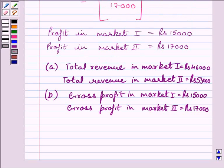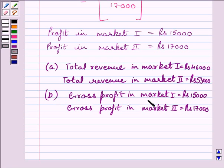So our final answer: total revenue in market one is Rs. 46,000, total revenue in market two is Rs. 53,000 for part A. For part B: gross profit in market one is Rs. 15,000 and gross profit in market two is Rs. 17,000. This completes the session. Hope you understood. Take care and goodbye.